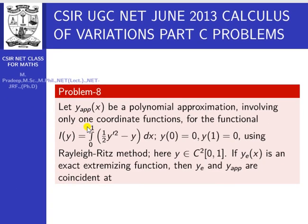The next problem is the Part C problem from 2013. Let y-approximate be a polynomial approximation involving only one coordinate function, for the functional i[y] equal to integral from 0 to 1 of (½ y-dash squared minus y) dx, with y(0) = 0 and y(1) = 0, using the Rayleigh-Ritz method.